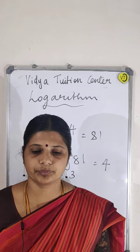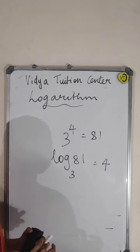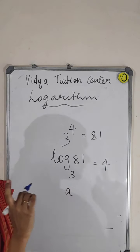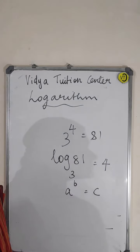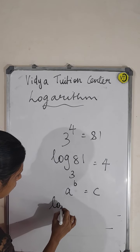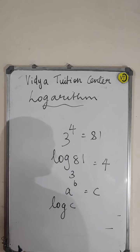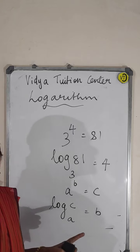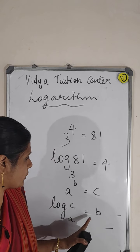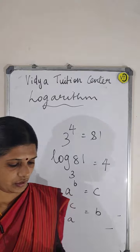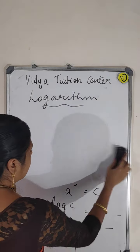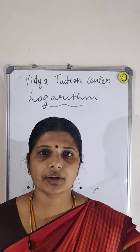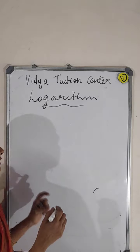Now one more: if a to the power of b is equal to c, how can I write this? Here: log c base a is equal to b. I can read it like this — log c base a equal to b. Now I am giving you a logarithmic form and you have to write it in the form of exponential form.